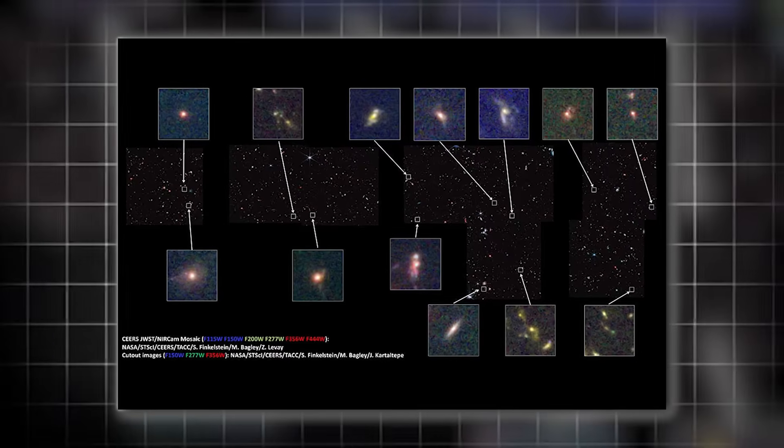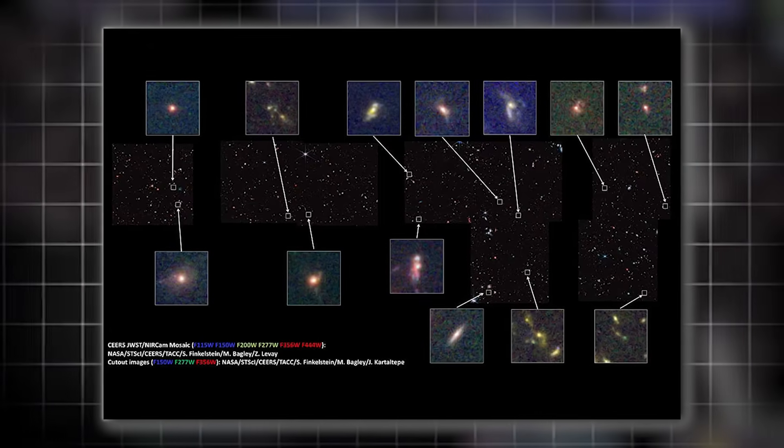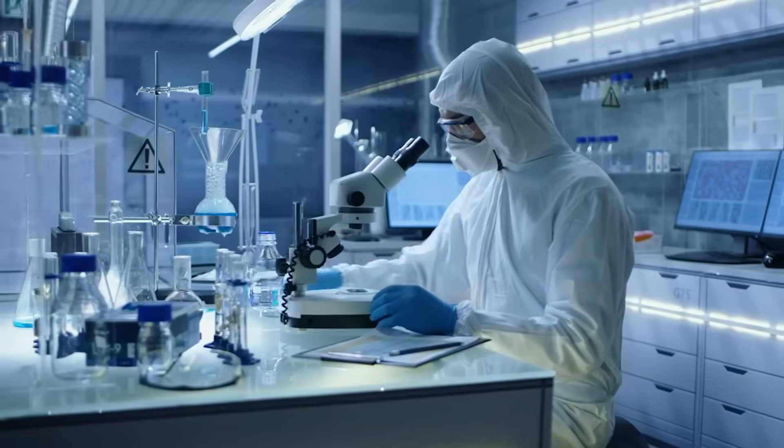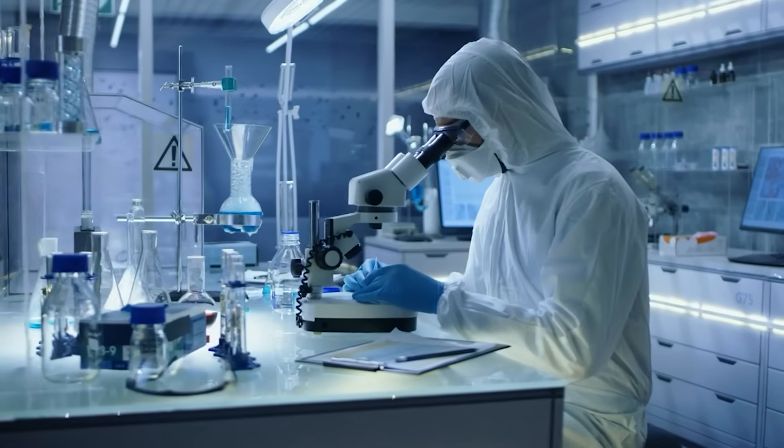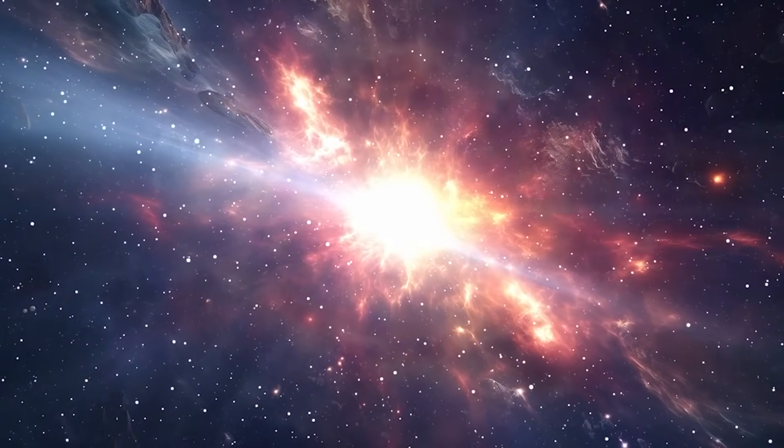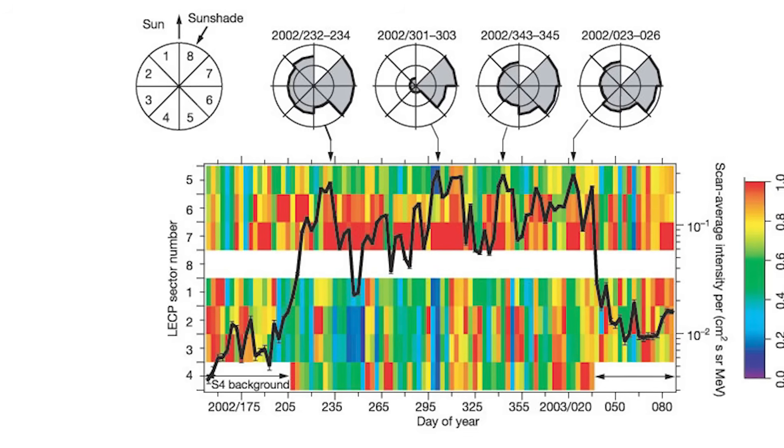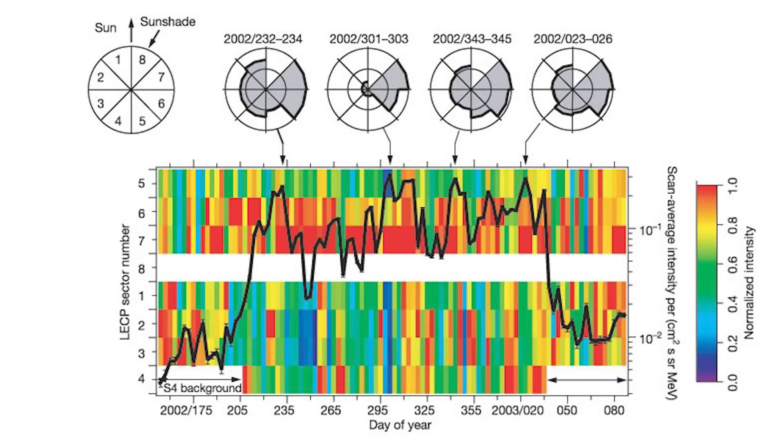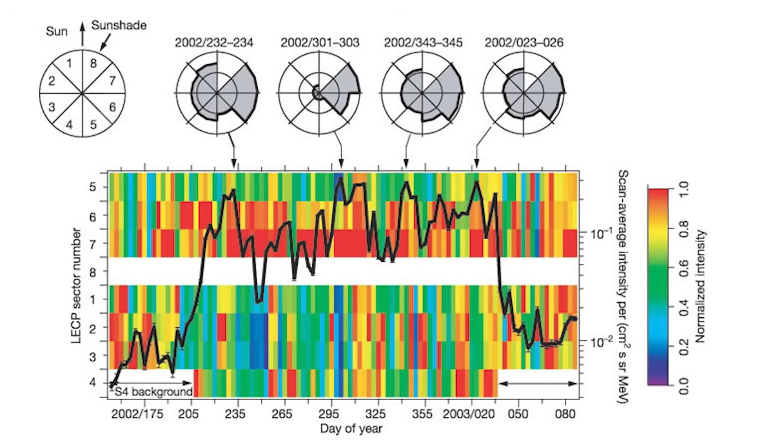The data streaming from the telescope suggests layers upon layers of complexity. The more closely scientists analyze the modulated emissions, the more it resembles some form of code, structured, dense, and hierarchical. There is a temptation, of course, to try and decode it, to interpret the message. But there's fear as well.